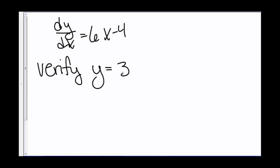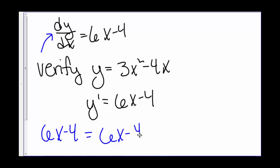Let's say we have the differential equation dy/dx = 6x - 4. We want to verify that y = 3x² - 4x is a solution. So we find the derivative, y' = 6x - 4. We plug it in to our differential equation. So we have 6x - 4 equals 6x - 4. So yes, we have verified our solution.